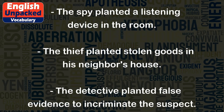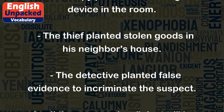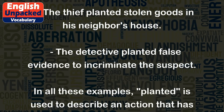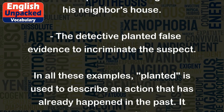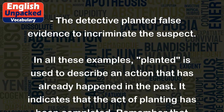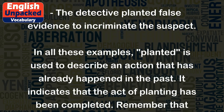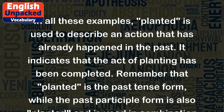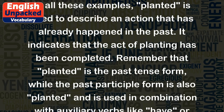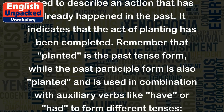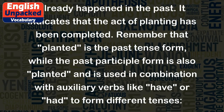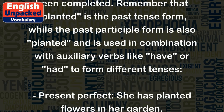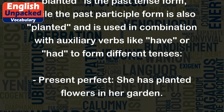In all these examples, 'planted' is used to describe an action that has already happened in the past. It indicates that the act of planting has been completed. Remember that 'planted' is the past tense form, while the past participle form is also 'planted,' and is used in combination with auxiliary verbs like 'have' or 'had' to form different tenses.